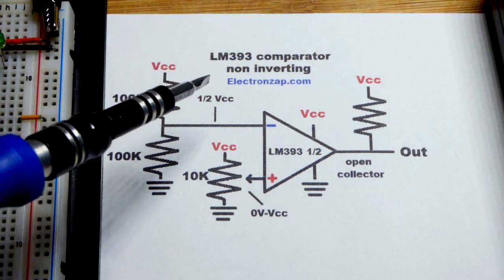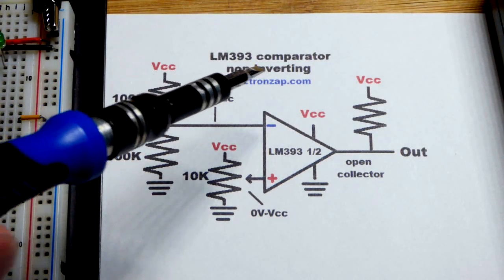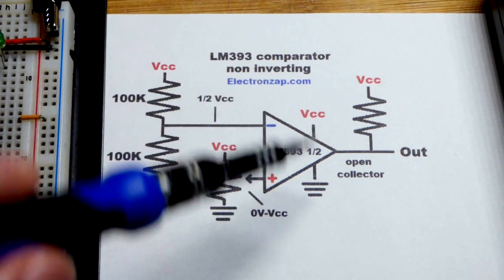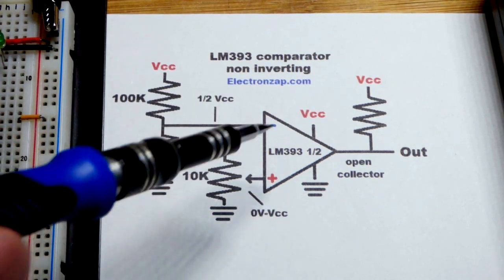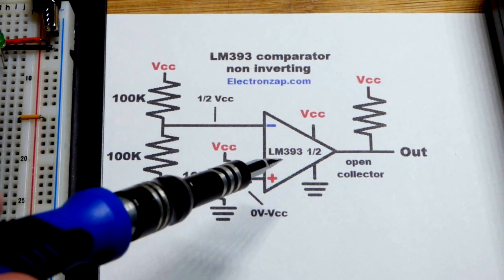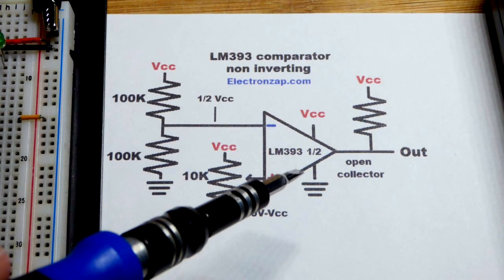So now in this video we're going to look at the LM393 comparator. This looks like the op amp I've been using lately, the LM358.